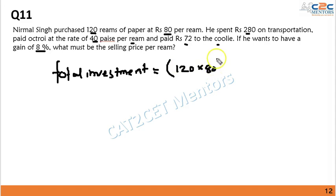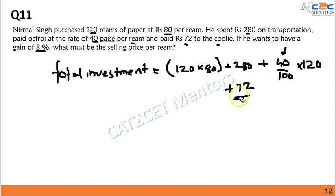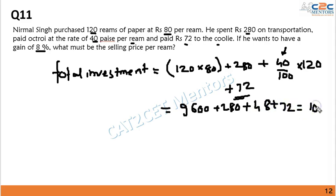The total investment is: 120 × 80 (cost of rims) = 9600, plus 280 for transportation, plus octroi of 40 paisa per rim for 120 rims = 48 rupees (converted to rupees), plus 72 rupees paid to the coolie. Total: 9600 + 280 + 48 + 72 = 10,000 rupees.